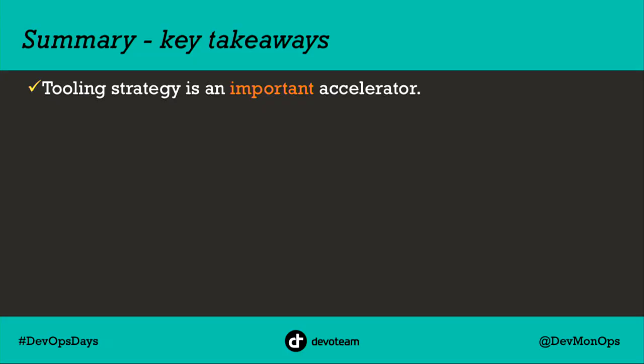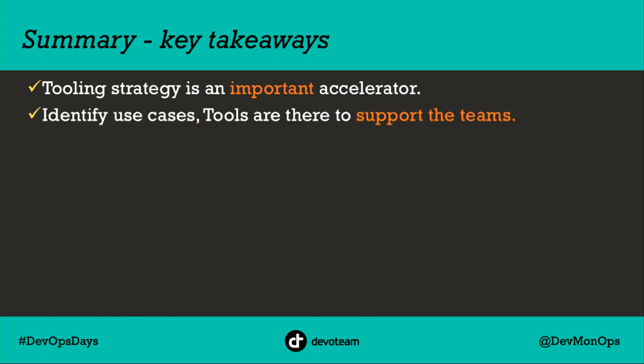Summarizing the key takeaways: the tooling strategy is an important accelerator — not only for you, but also for the whole enterprise. Don't forget that it's a big area, and it's not only about pure IT, but also compliancy, finance, and operational stuff. Identify the use cases extracted from the objectives the organization wants to achieve — what creates value — and support and service the teams instead of delivering a service that is not supported at all.